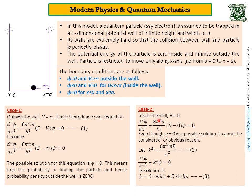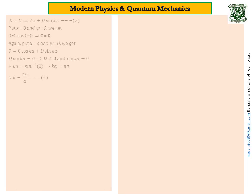Let us proceed. Make some substitutions: take the whole term as k squared. Then this equation becomes d²ψ/dx² + k²ψ = 0. This is a second-order differential equation. There are many methods to find the solution in mathematics. Skipping all the intermediate steps, I write the solution directly: psi equals C cos(kx) plus D sin(kx). Call it equation number 3. Here C and D are constants. Both C and D cannot be zero; any one of them can be zero, but if both are zero, then psi equals zero, which is not an eigenfunction.